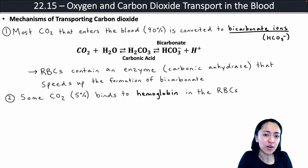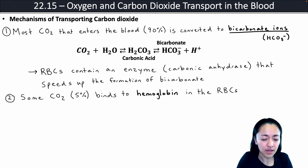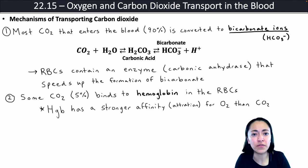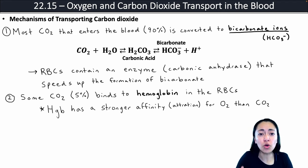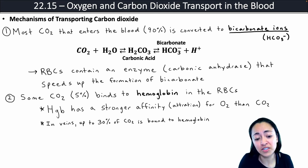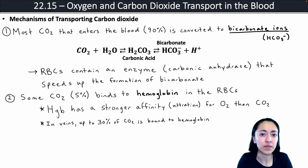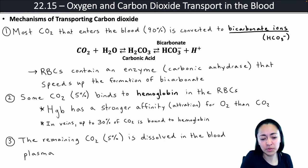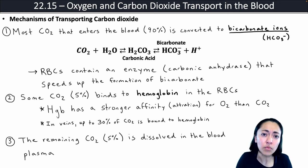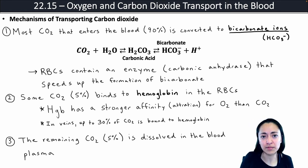Some carbon dioxide — about 5% of the carbon dioxide in your arteries — will bind to hemoglobin in the red blood cells. It's important to note that hemoglobin has a stronger affinity for oxygen than carbon dioxide, so if oxygen is available, hemoglobin will preferably bind to oxygen. In your veins, up to about 30% of carbon dioxide is bound to hemoglobin because many of your veins do not contain a lot of oxygen, so carbon dioxide does not have to compete with oxygen to bind. The remaining amount — about 5% — is just dissolved in the blood plasma. Carbon dioxide is more soluble in blood than oxygen, so you see more CO2 dissolved in blood plasma than oxygen.